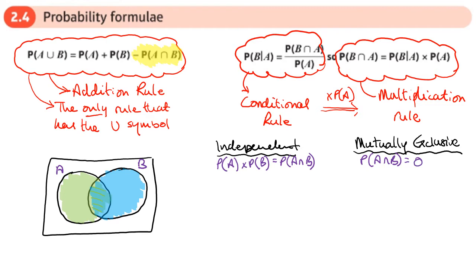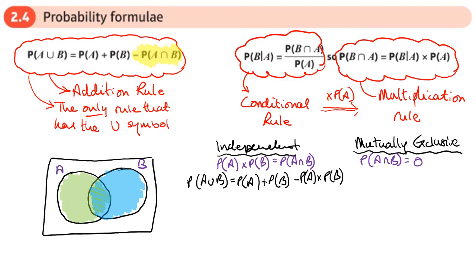What happens to the addition rule? When things are independent, the probability of A union B equals the probability of A plus the probability of B minus the probability of A times the probability of B — you replace the P(A∩B) term with P(A)×P(B). When things are mutually exclusive, P(A∩B) is 0, so the probability of A union B is simply the probability of A plus the probability of B.